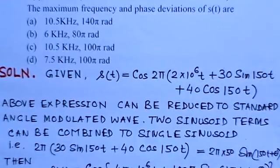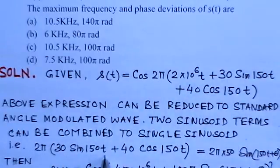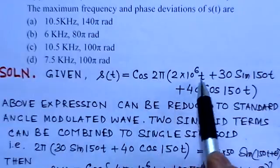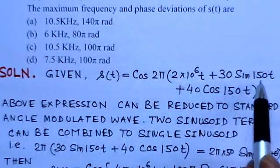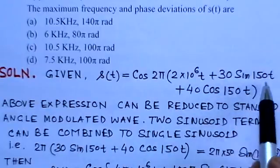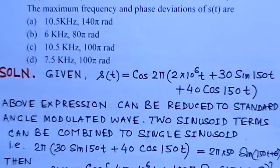That is, we can combine 2π(30 sin 150t + 40 cos 150t). I have taken 2π here and left this part only. We have considered this phase part here. This we have put it into this form.